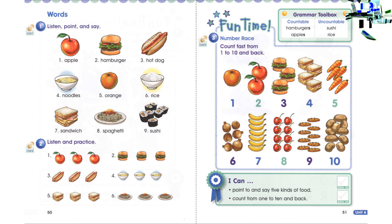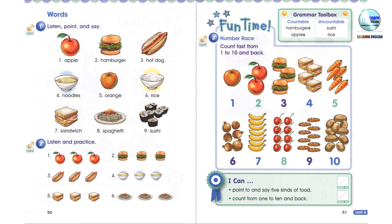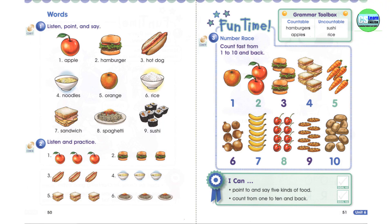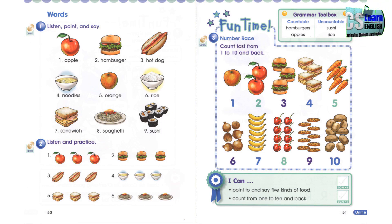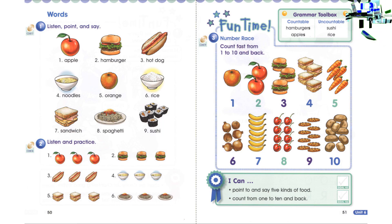1 orange, 2 apples, 3 hamburgers, 4 sandwiches, 5, 6, 7 bananas, 8 cherries, 9 cookies, 8 cherries, 7 bananas, 6, 5, 4 sandwiches, 2 apples, 1 orange. Okay, good. We're finished.